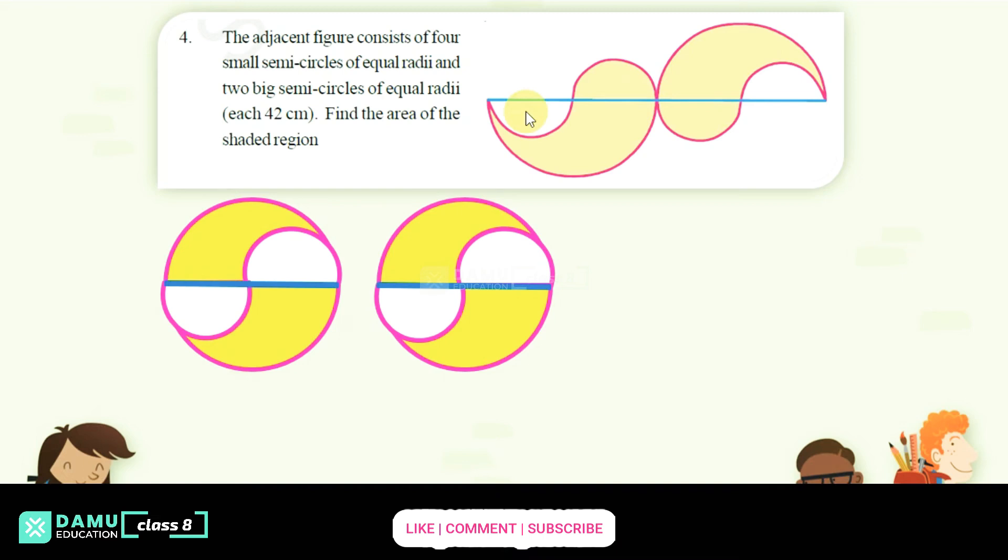These are the four small semicircles: 1, 2, 3, 4. The bigger circles are big 1 and big 2. The small ones will be there.